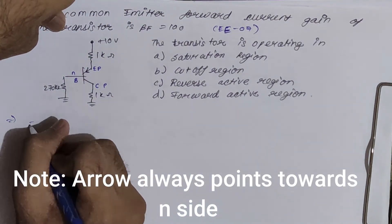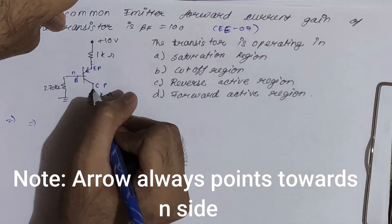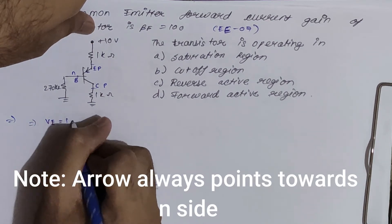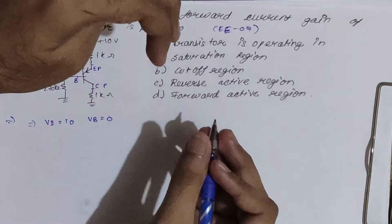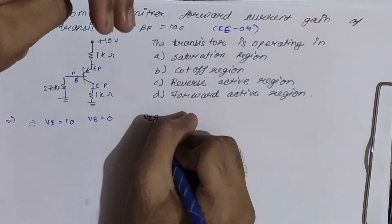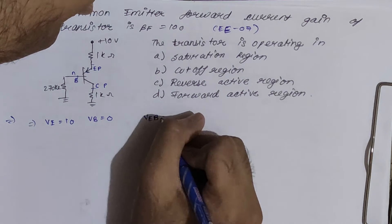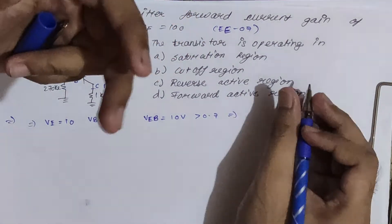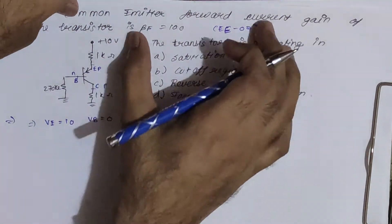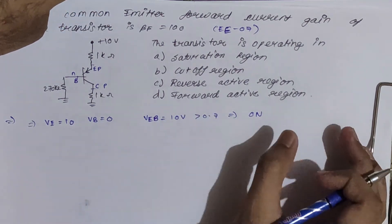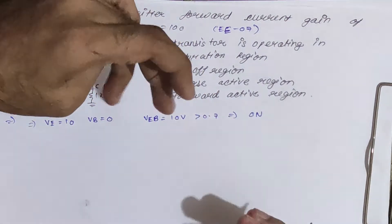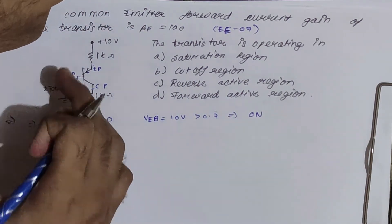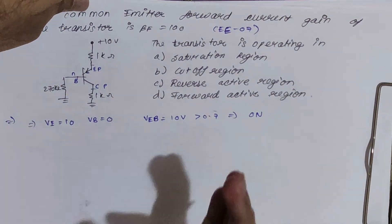First, check if the transistor is ON. Remove the transistor and calculate VE and VB: VE = 10V, VB = 0V. For a PNP transistor, compare VEB (not VBE): VEB = 10V > 0.7V, so the transistor is ON. If VEB(active) is not specified in the question, assume 0.7V.